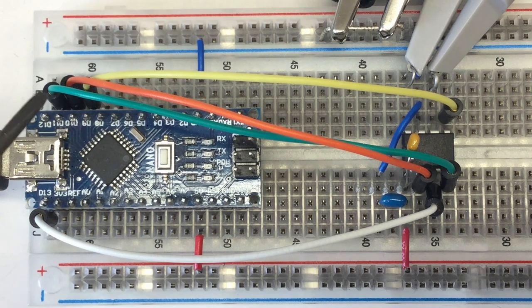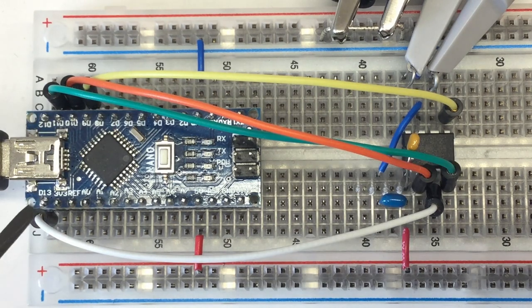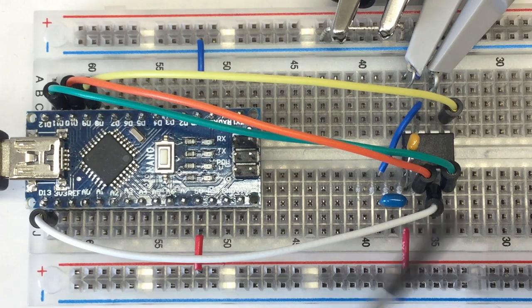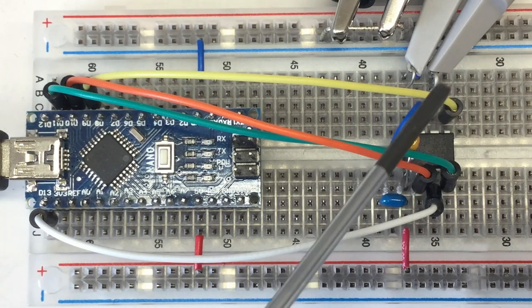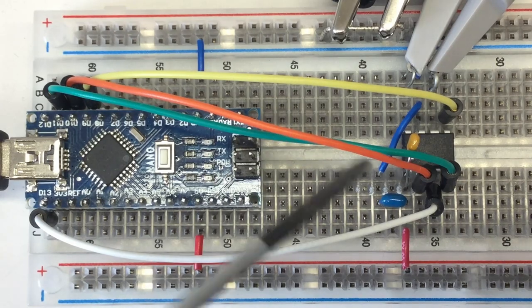I have my slave select, the orange one connected to D10. I have my master out slave in data line. And I have my serial clock line. And of course, my oscilloscope probes and their connections to ground. That's it.